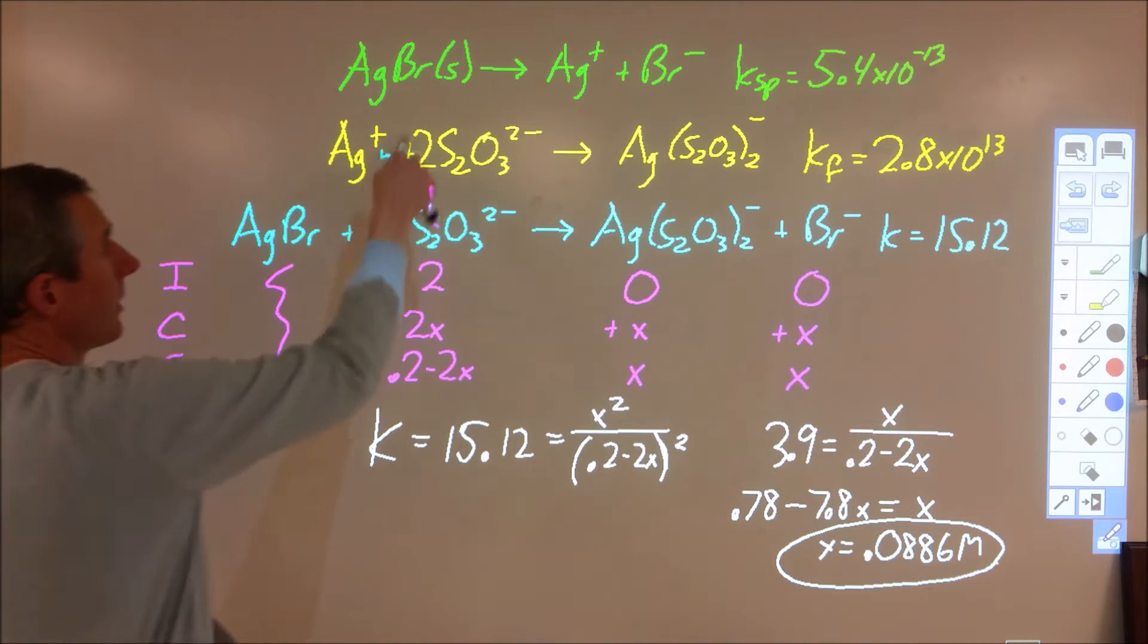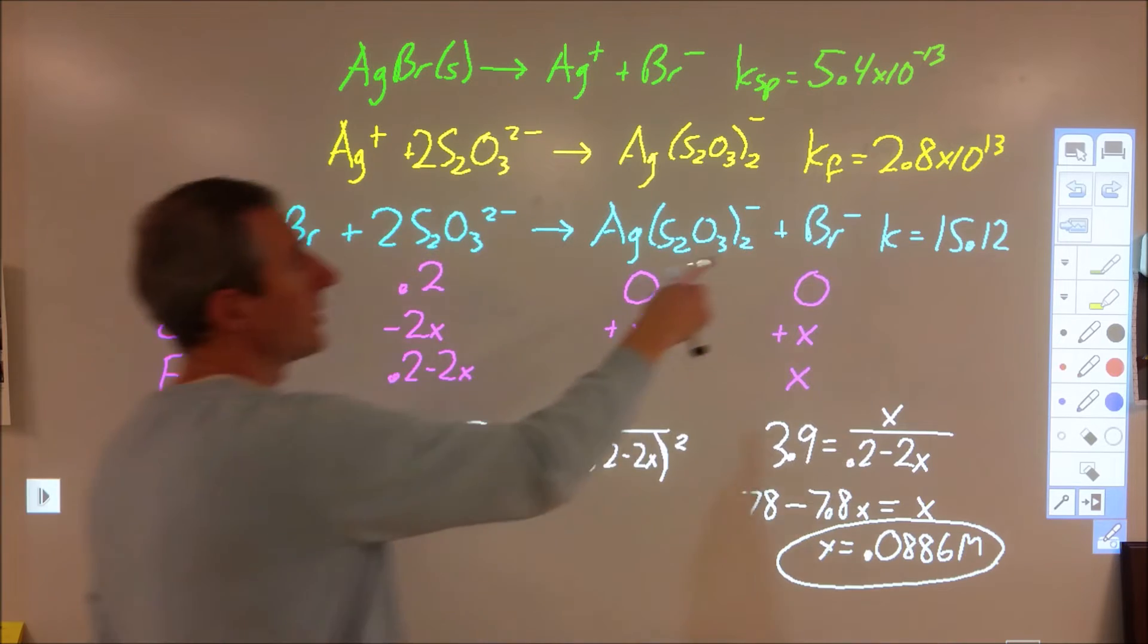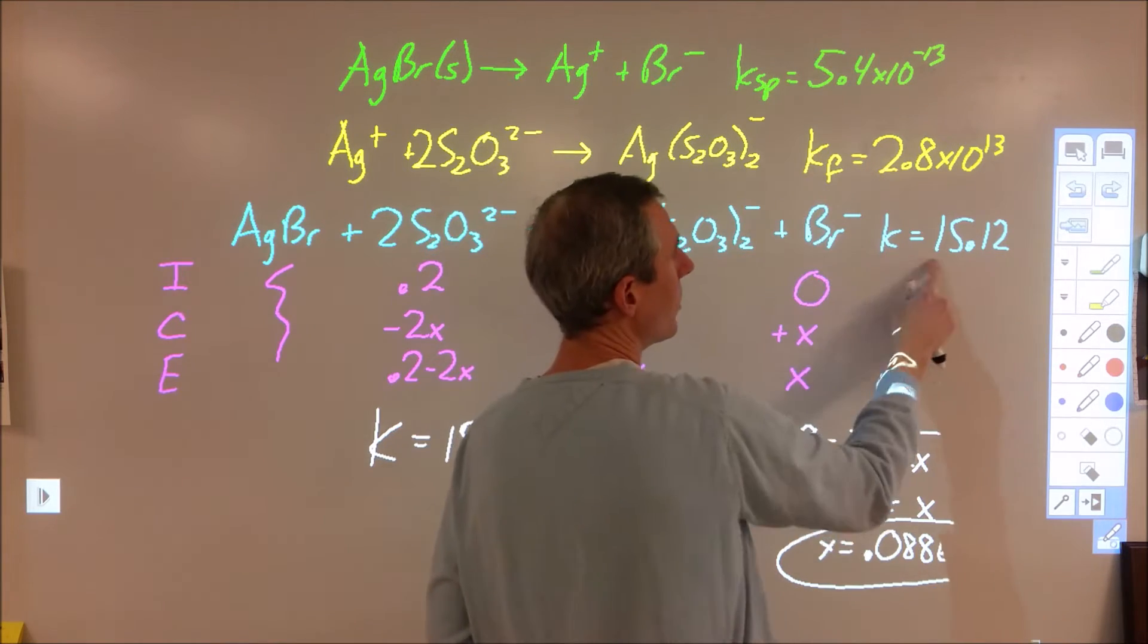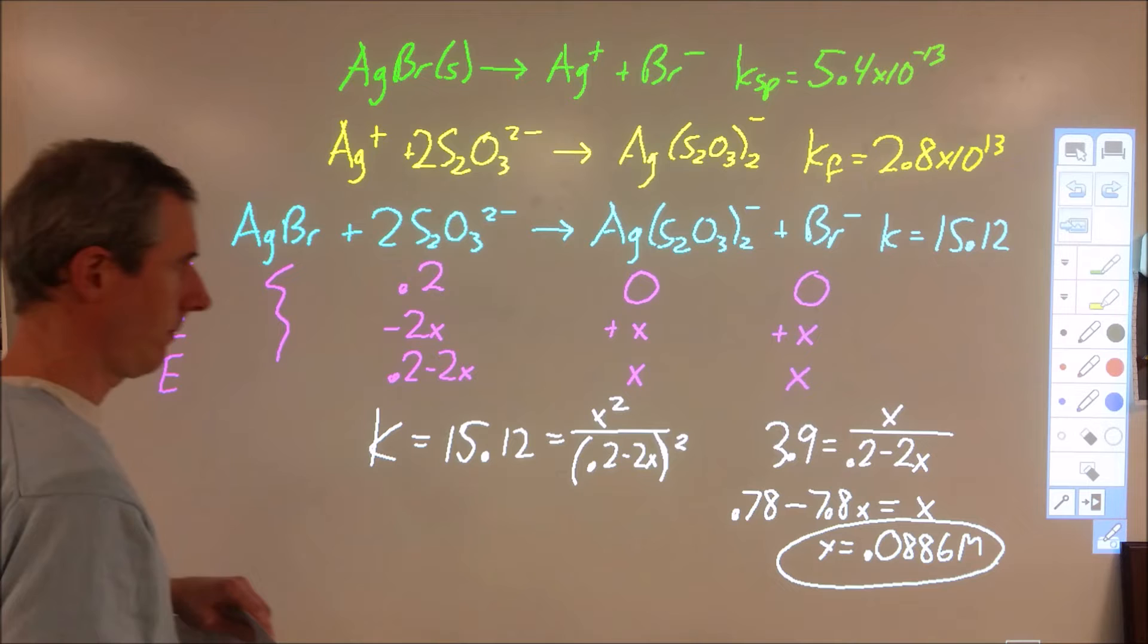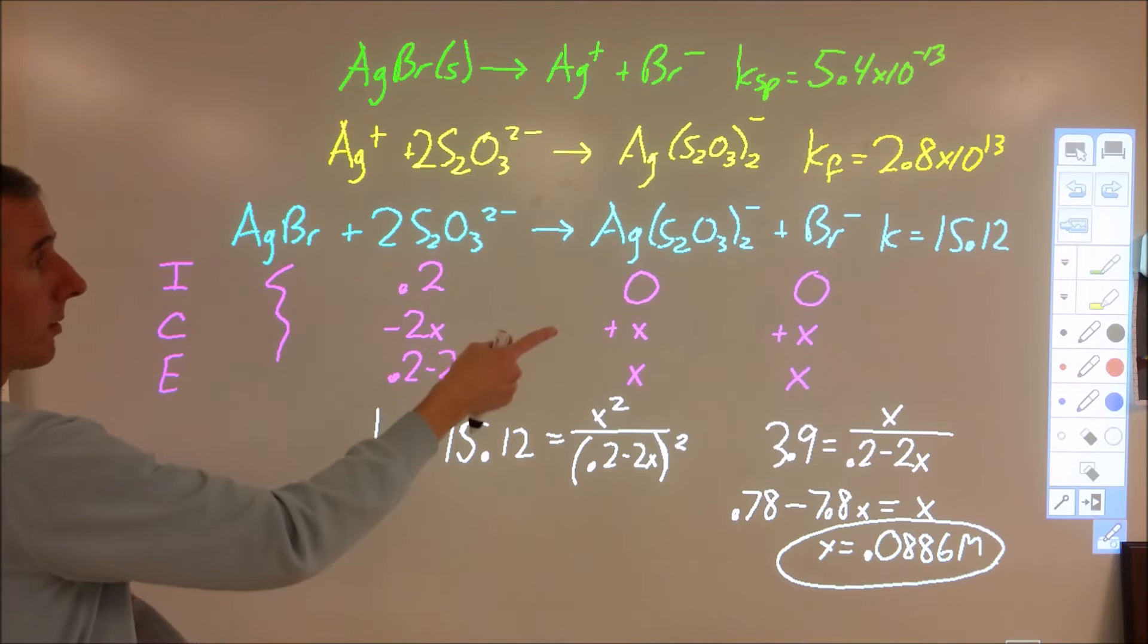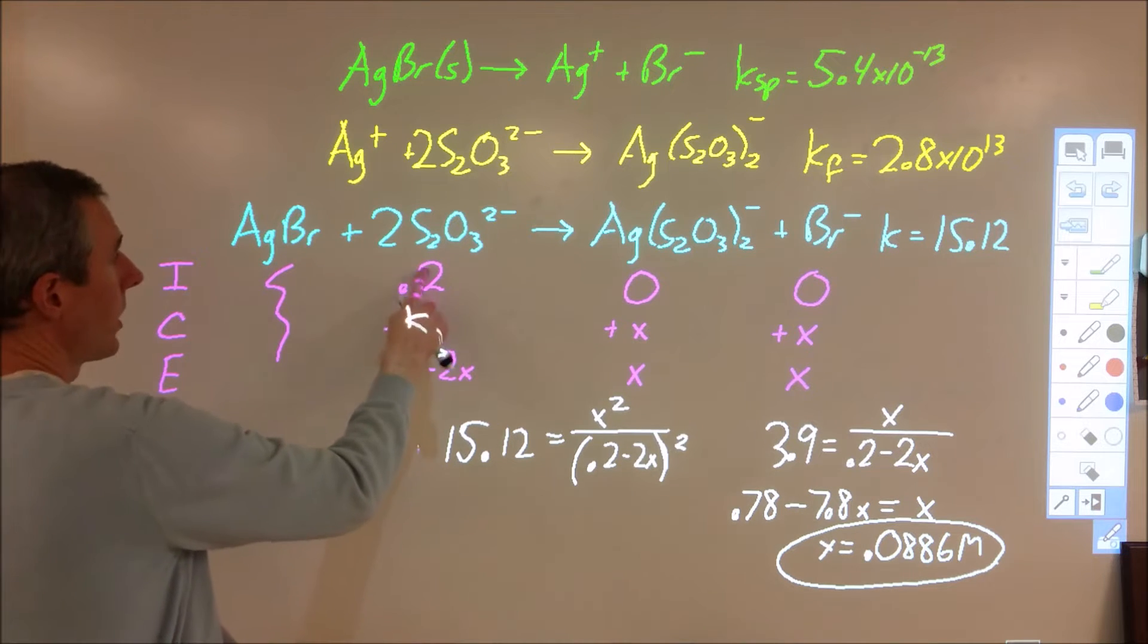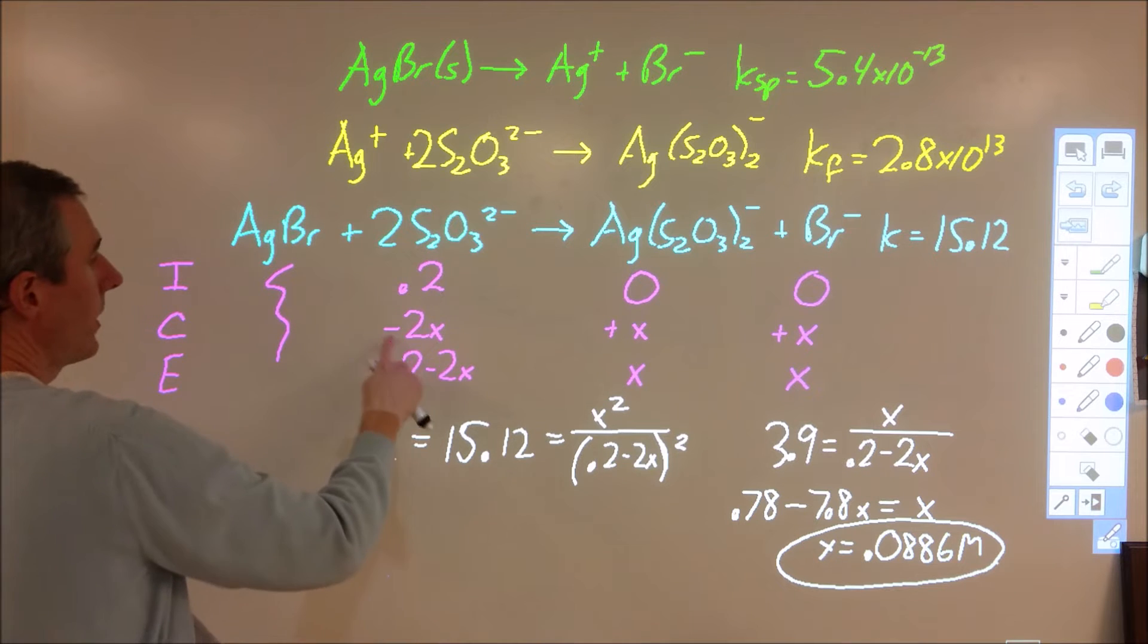So the problem is then asking, what if we try and dissolve the solid using thiosulfate to form this complex ion? How will that go? So it turns out that if you look, these two add up to be this, which means that these two equilibrium constants will multiply to give us a new equilibrium constant. So since that equilibrium constant we know, we can do an ICE chart for this, where we start with 0.2 molar of thiosulfate, we subtract 2x and end up with this.